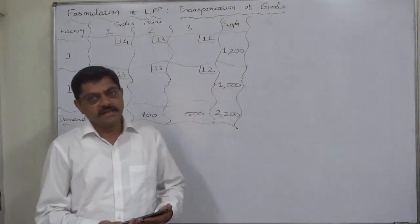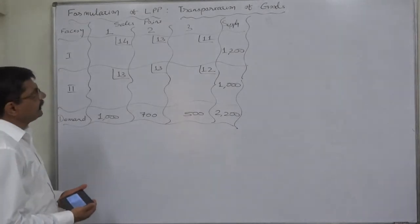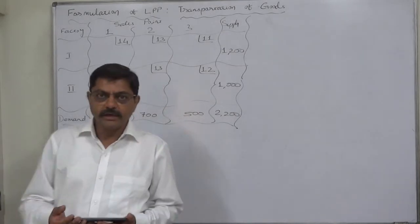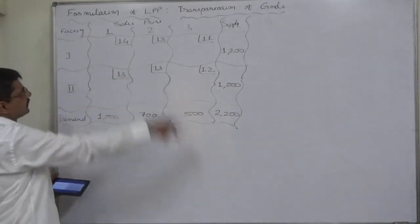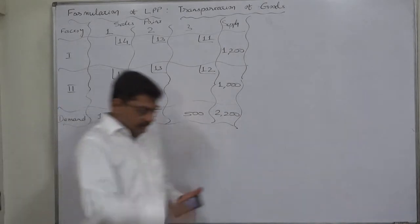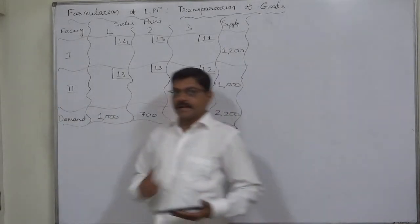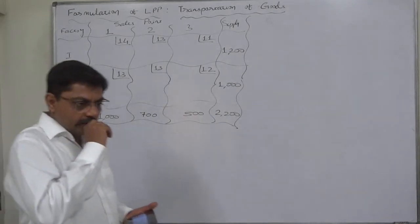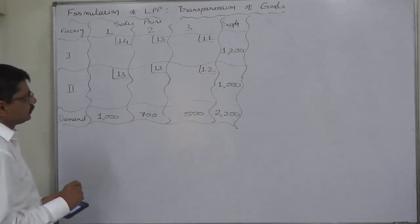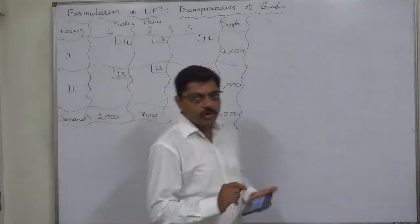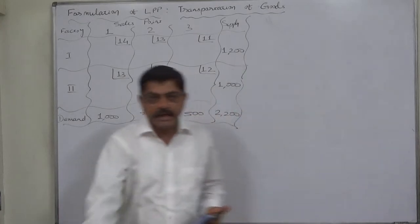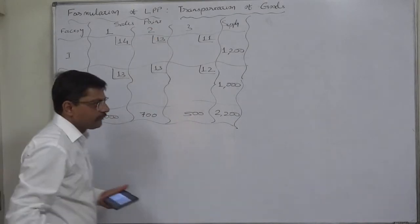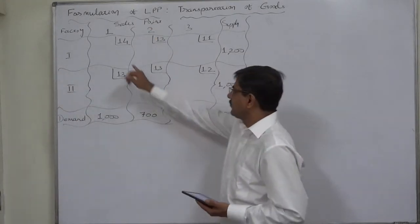Hello and welcome. A new case in formulation of an LPP — this time we are with transportation of goods problem, in which we need to transport goods from factory 1 and 2 to sales points 1, 2, and 3. In case of a transportation problem, if we want to formulate an LPP we have to take the number of variables equal to the number of rows multiplied by number of columns, meaning here we would normally take 1, 2, 3, 4,